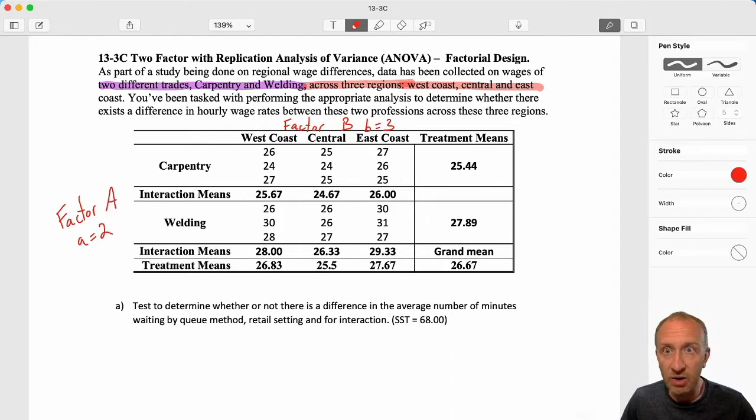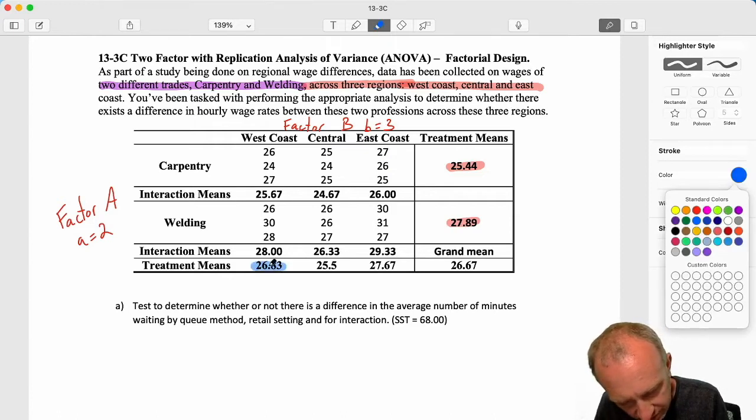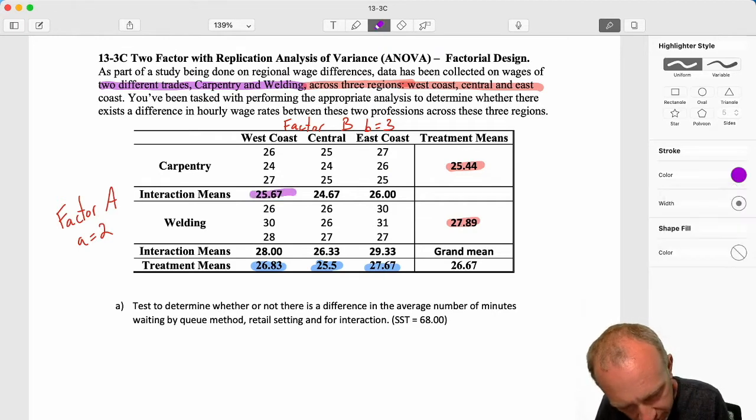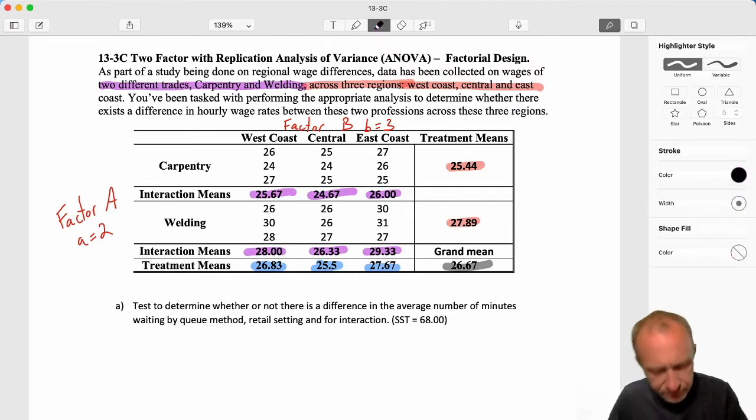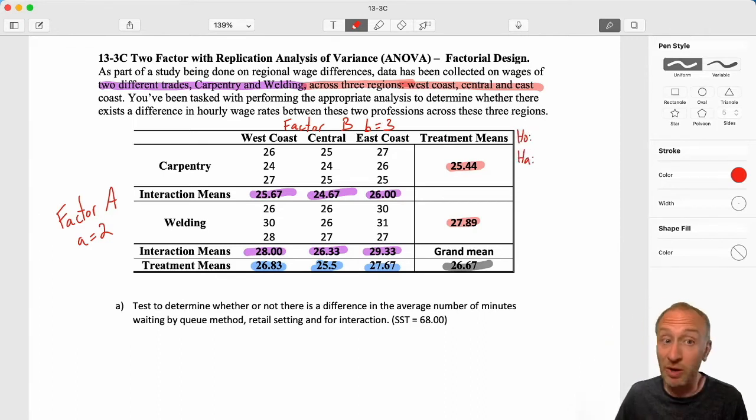So we have wages on two different trades, carpentry and welding, across three different regions, west coast, central, and east coast. So I'm going to call that my factor B. And here I have B equals three treatments. Again it really makes no difference which one I call factor A or factor B. You've been tasked with performing the appropriate analysis to determine whether there exists a difference in the hourly wage rates between these professions across these three regions.